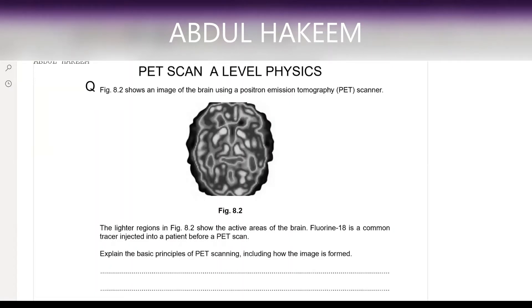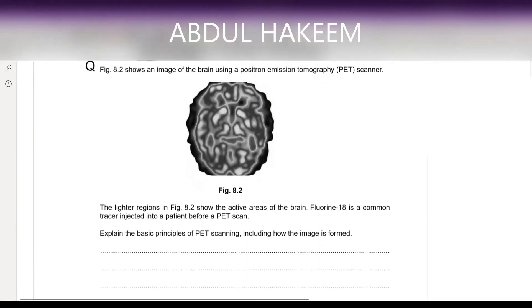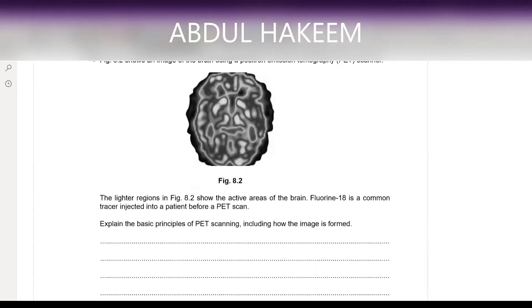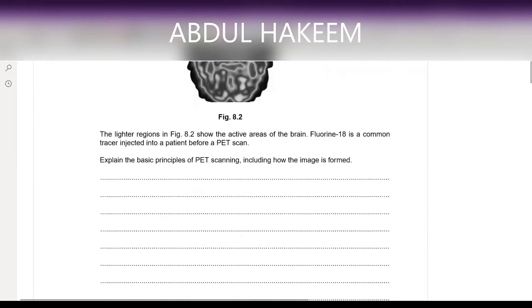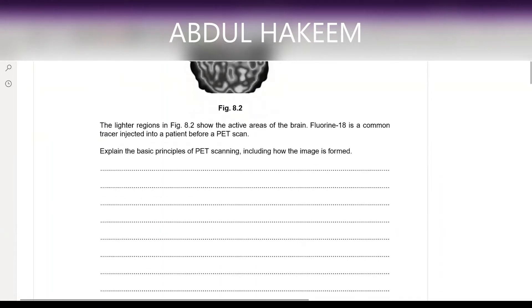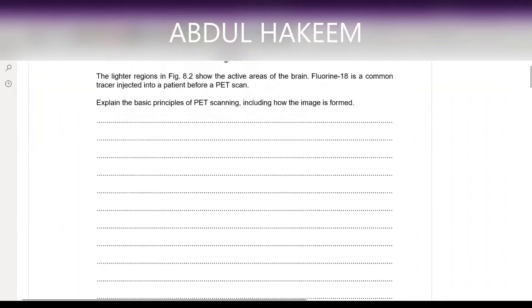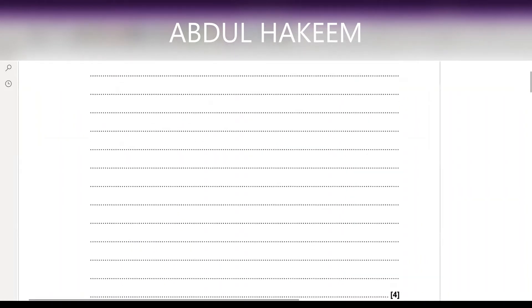This is a new topic — this is a PET scan, positron emission tomography scan for medical physics, with a few questions. The question is: this figure shows an image of the brain using the positron emission tomography scanner. The lighter region in the figure shows the active area of the brain. Fluorine-18 is a common radioactive tracer injected into the patient before a PET scan. Explain the basic principle of PET scanning, including how the image is formed.